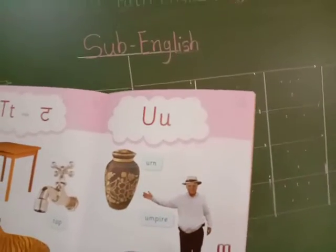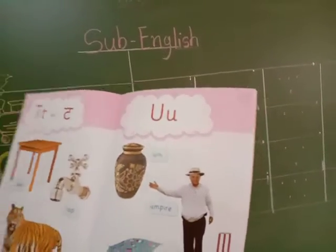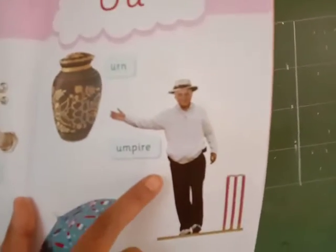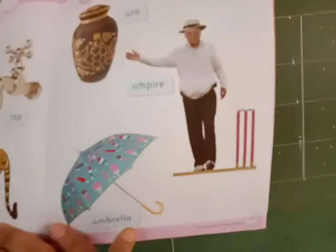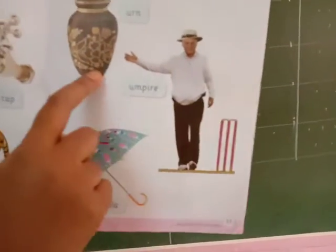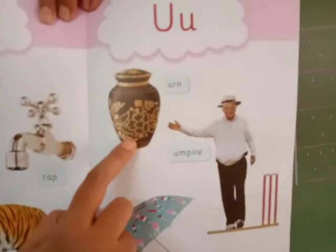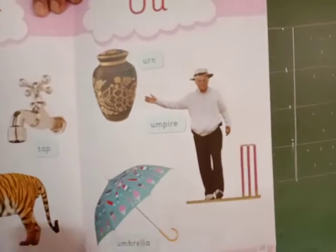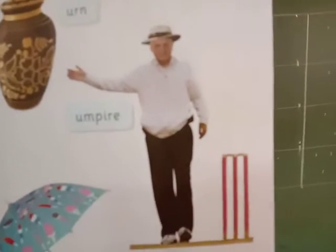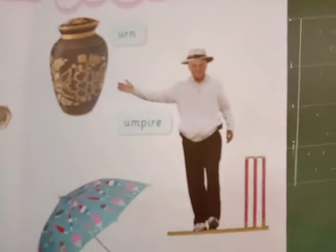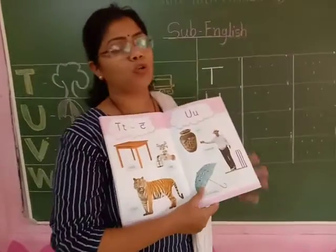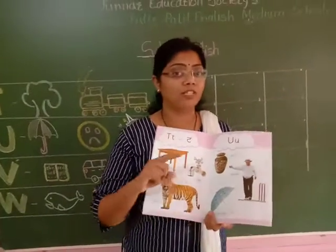Then U. U says U, U says U, U says U, U, U. And U for urn — urn is a utensil, like a vase, okay. Then umpire, and umbrella. Do you like to see a cricket match on TV? In that cricket match, there is an umpire.